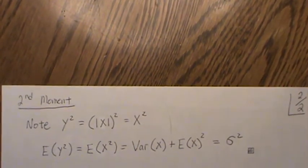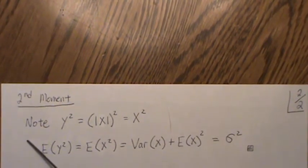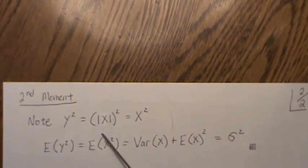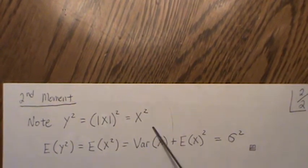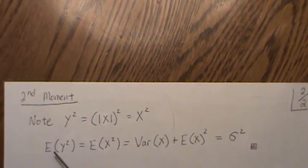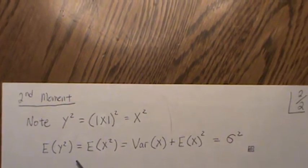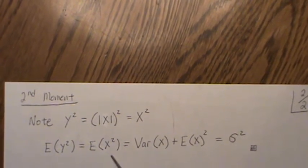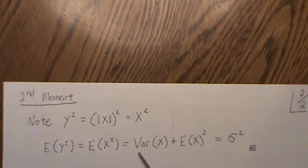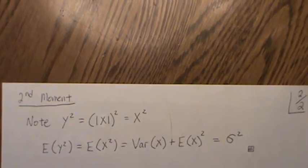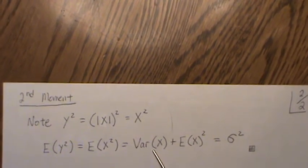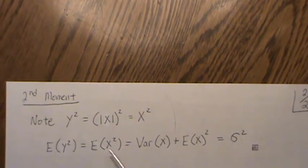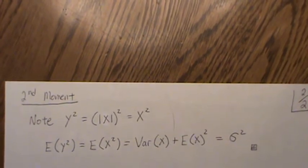Now, to find the variance, it's easiest to find the second moment first. So note that y squared is equal to the absolute value of x squared, which is really just the same as x squared. So the expected value of y squared is equal to the expected value of x squared. But then this is that formula where it's the variance of x plus the mean squared. And the mean of this is zero. And that's sigma squared. So that's the expected value of y squared.